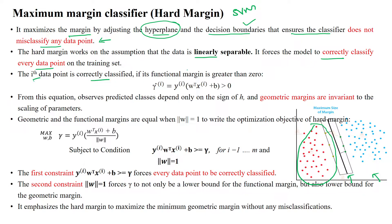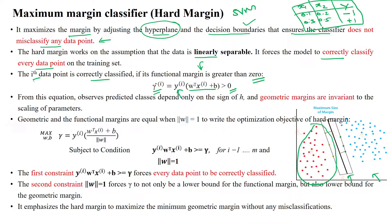The i-th data point is correctly classified if its functional margin is greater than zero. The functional margin equation is: the actual output multiplied by the predicted output, which should always be greater than zero. For example, suppose in the given dataset we have features x1, x2, and actual output — with class minus 1 for one sample and class plus 1 for another. The predicted output is the hypothesis: w-transpose x plus b.